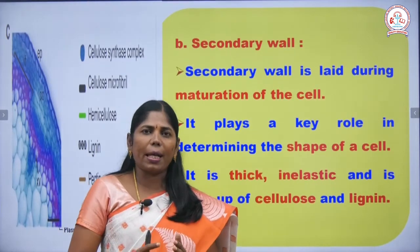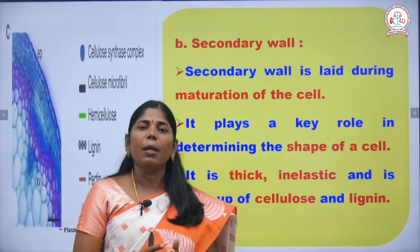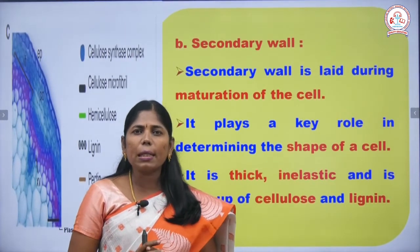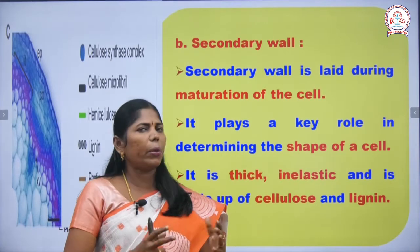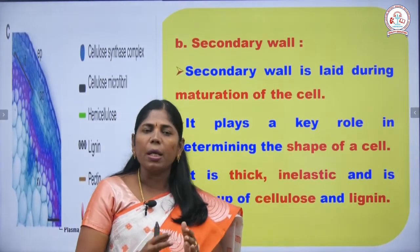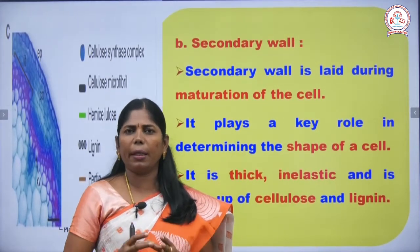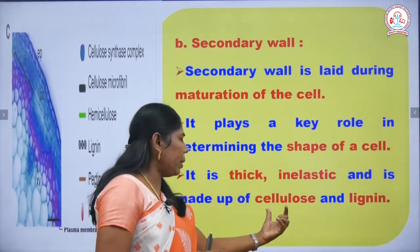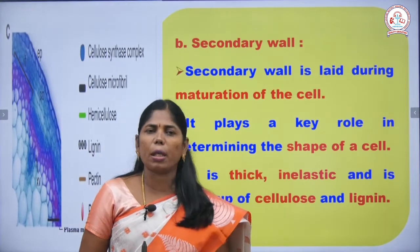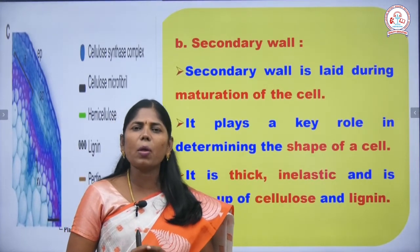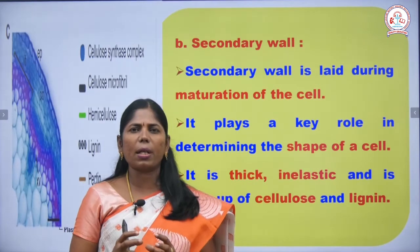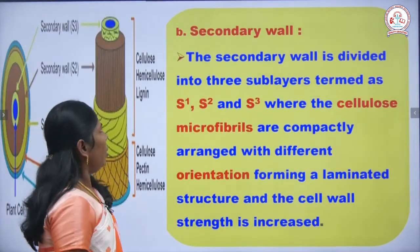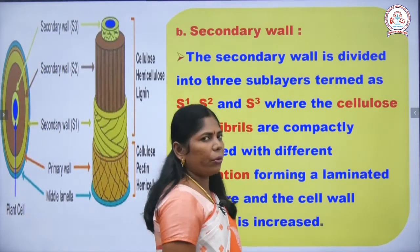The secondary wall is very, very thick and inelastic. It is made up of cellulose and lignin. The primary wall is made up of hemicellulose and pectin — with more hemicellulose. The secondary wall has more cellulose, and lignin is also present, making it very, very thick.